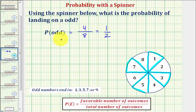So the probability of spinning an odd is one-half, but probability is often expressed as a decimal and a percentage, so let's also show that. We should recognize that one-half is equivalent to zero-point-five, or five-tenths.